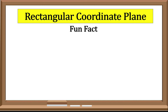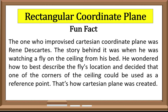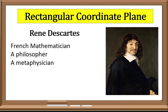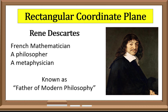Fun fact: the one who created the Cartesian Coordinate Plane was Rene Descartes. The story behind it was when he was watching a fly on the ceiling from his bed, he wondered how to best describe the fly's location and decided that one of the corners of the ceiling could be used as a reference point — that's how the Cartesian Coordinate Plane was created. He was a French mathematician, a philosopher, a metaphysician, and is also known as the Father of Modern Philosophy.